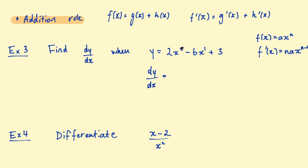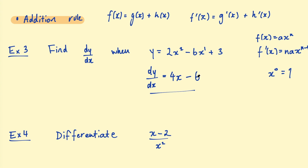Taking this derivative, we look at each term separately using the power rule. For 2x squared: the exponent is 2, we multiply that by the coefficient to get 4x, and subtract 1 from the exponent — 2 minus 1 is 1, so just 4x. Then for 6x to the power of 1: one multiplied by 6 is 6, and one minus one is zero. x to the power of zero is just 1, so this is 6 times 1 — just 6. Then the constant on the end: by the constant rule, the derivative of any constant is zero. So our final answer is 4x minus 6. See how fast that was using the addition rule?